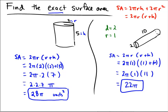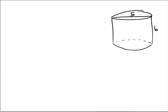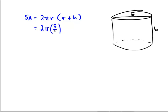Why don't you pause the video and try one on your own? Try to find the surface area of this cylinder. The surface area is 2 × π × r × (r + h). Here the diameter is 5, so the radius must be 5/2.